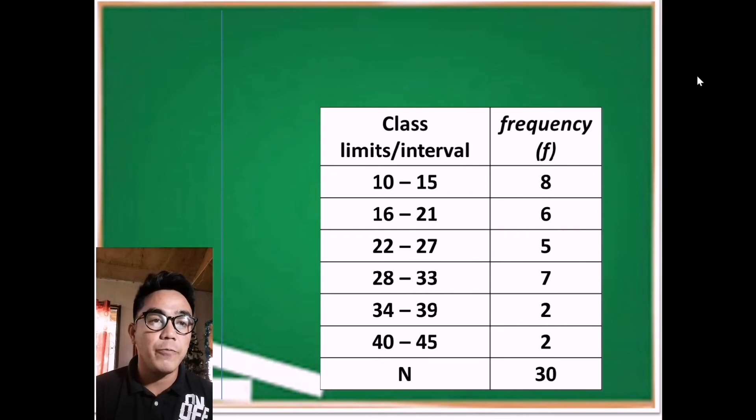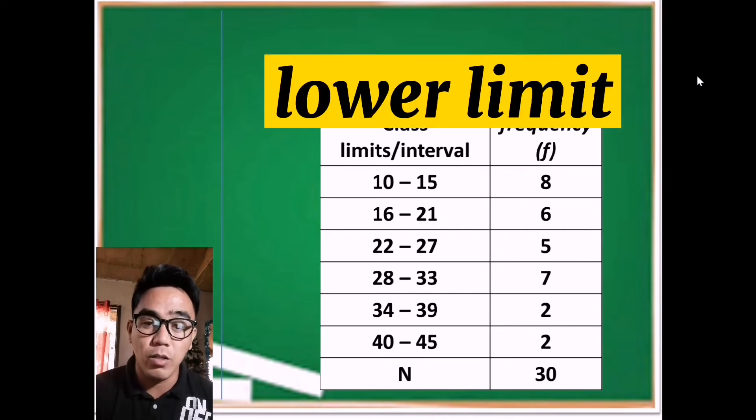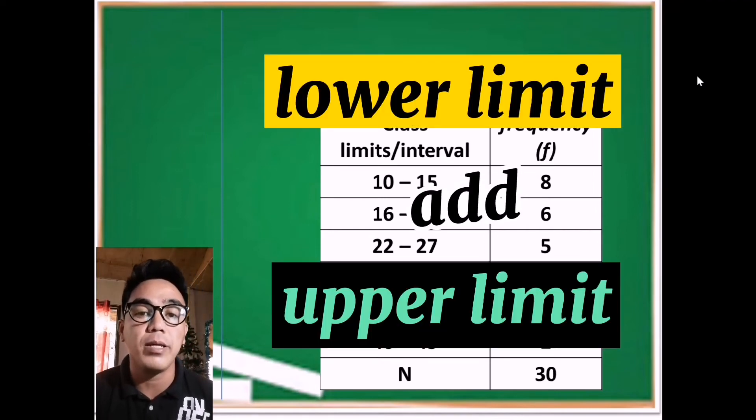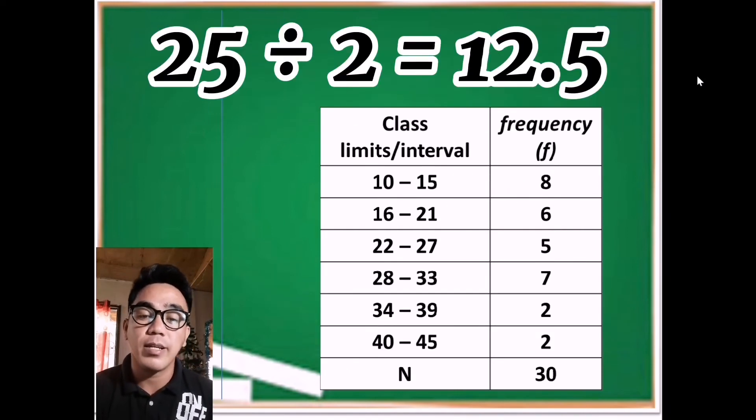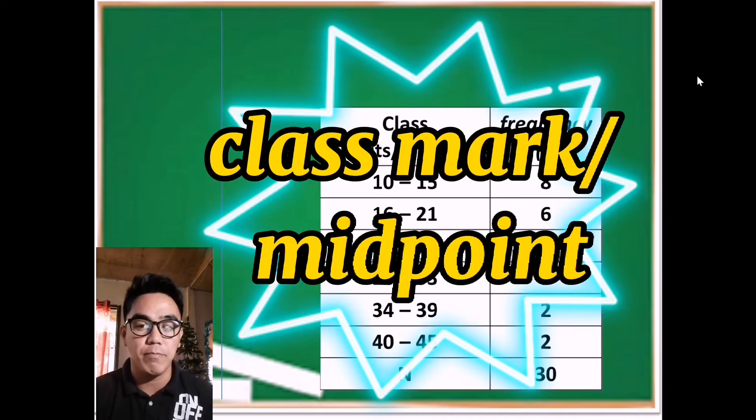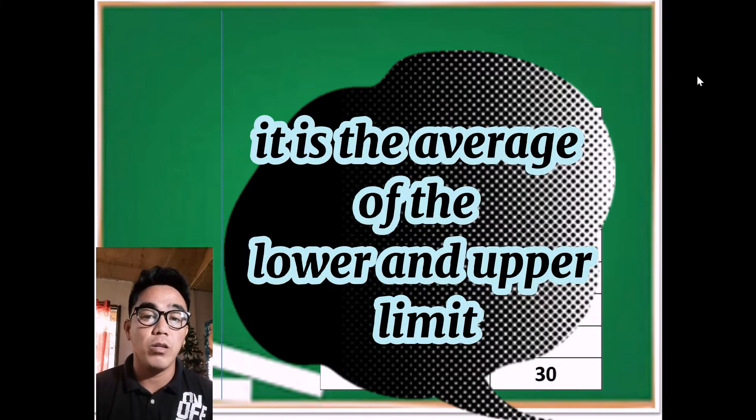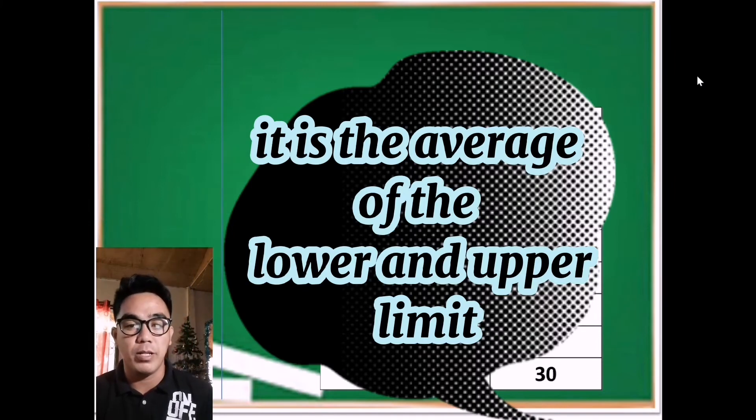Now if we're going to add the lower limit and the upper limit such as 10 plus 15 is 25, then get the half of it which is 12.5, then we're talking about the class mark or class midpoint. In short, class mark or class midpoint is the average of the lower limit and the upper limit.